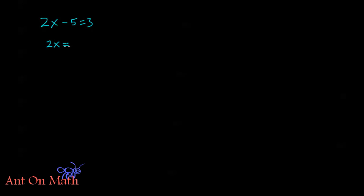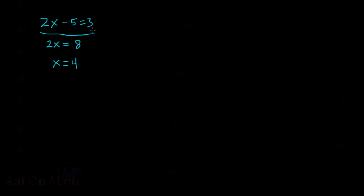This is the same as 2x equals 8 by adding 5 to both sides, so x is equal to 4. Here we have a single solution, x equals 4. That's the only value of x that if we plug in to our original equation, we get 2 times that value of x minus 5 equals 3 — in this case, 8 minus 5 equals 3. When we have more than one solution, we call that the set of all solutions. Here that set only contains one solution: x equals 4.